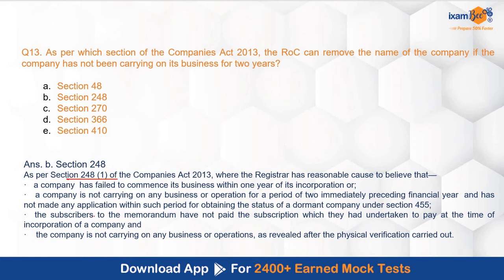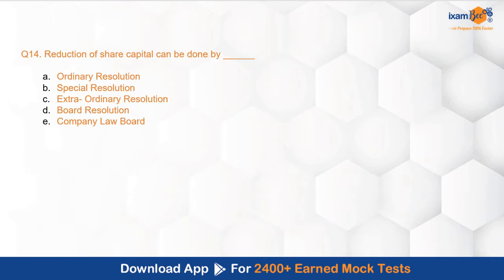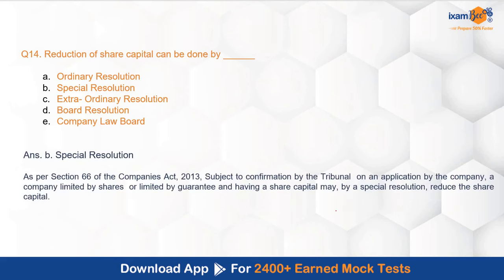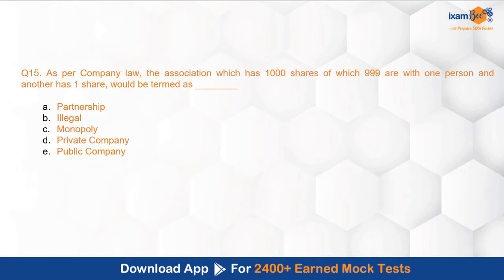The next question talks about reduction of share capital: how can it be done? The Companies Act covers various provisions with respect to reduction of share capital. The correct option is B — Special Resolution — as provided under Section 66, which states that subject to confirmation by the Tribunal on an application by the company, a company limited by shares or limited by guarantee and having share capital may, by a special resolution, reduce its share capital. So, both a special resolution and confirmation from the Tribunal are required under Section 66.